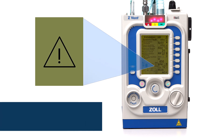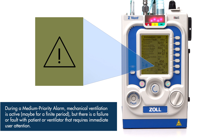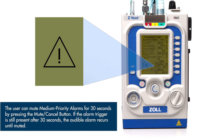During a medium priority alarm, mechanical ventilation is active, maybe for a finite period, but there is a failure or fault with the patient or ventilator that requires immediate user attention. The LED array will either illuminate solid red or slowly flash, accompanied by a slow audible tone. The user can mute medium priority alarms for 30 seconds by pressing the Mute-Cancel button.